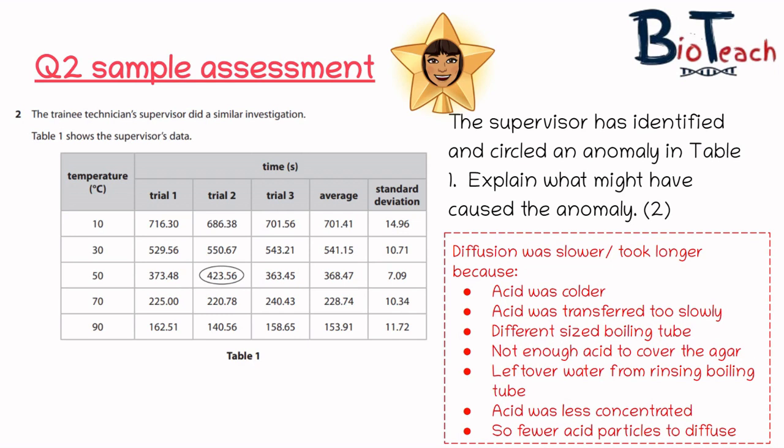So the first thing I would say is that the diffusion was slower because if you look at the time it's taken longer for trial number two, so that would mean that the diffusion was slower. So I would say that diffusion was slower or that it took longer because the acid was colder because that temperature might not have been maintained. The acid could have been transferred too slowly into the boiling tube. I've even gone on to say that you could have used a different size boiling tube by accident and that would mean that there wasn't enough acid to cover the agar, and you could also explain that when you were rinsing out the boiling tubes that there could have been leftover water in that boiling tube which would mean that the acid was less concentrated, and if the acid is less concentrated then there would be fewer acid particles that would diffuse through the agar.